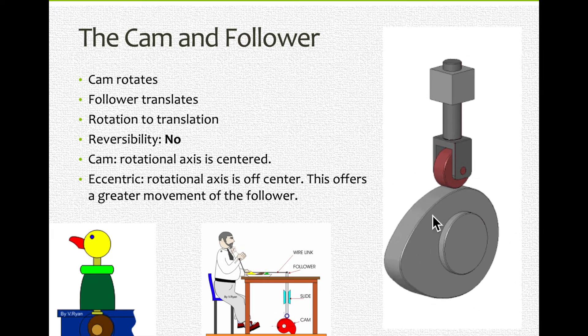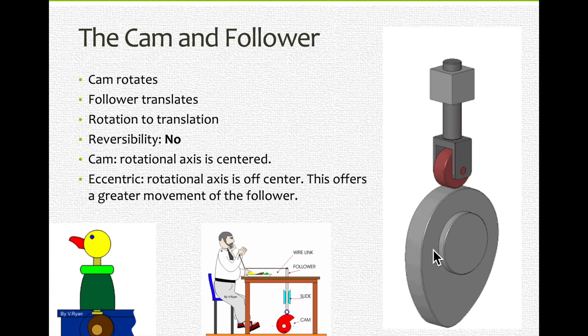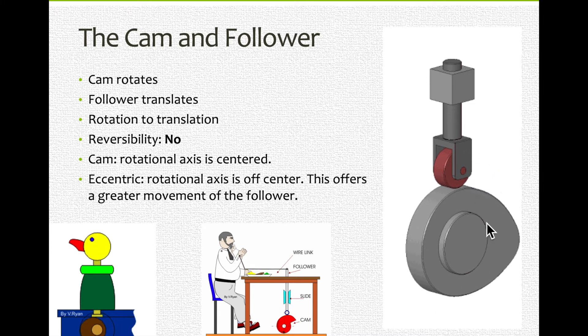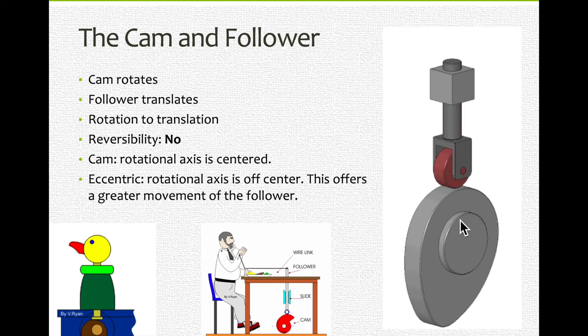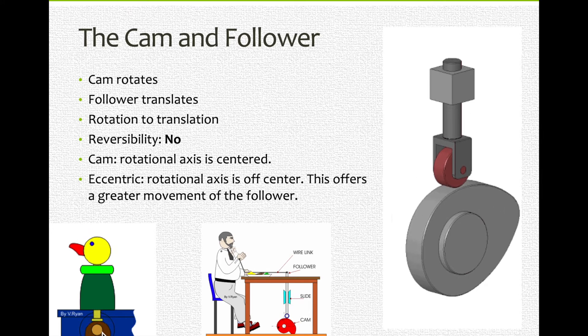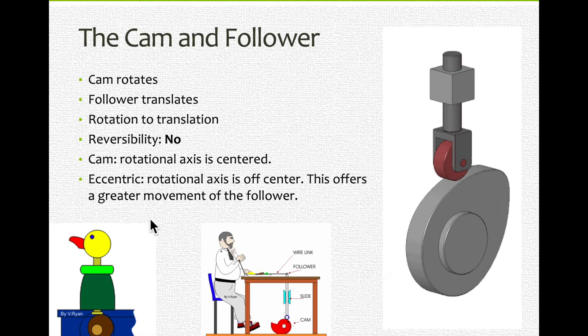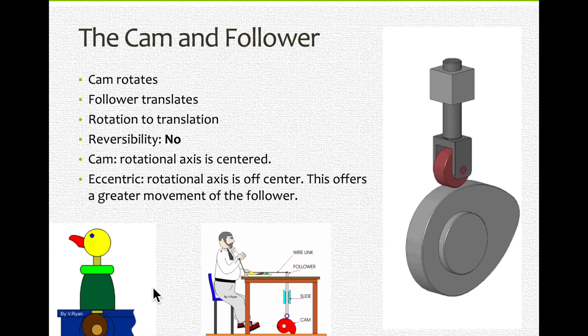Now the cam has a rotational axis over here that is centered. If I could draw a circle, take out the part of the shape that is a little bit longer, we would see that this here is really centered. Now you could have sometimes, like this one is a good example, sometimes the axis of rotation will be off center. We call this an eccentric.